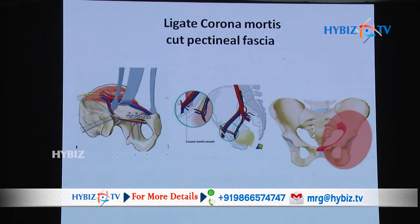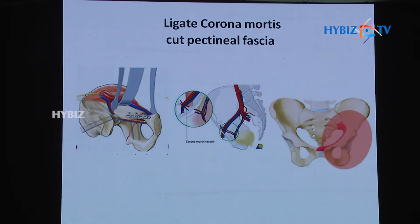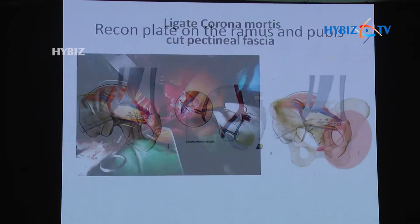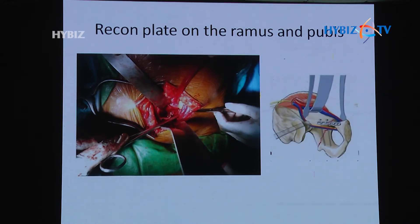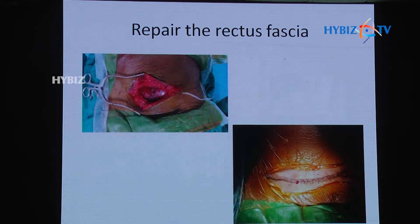The corona mortis is identified while sweeping around the iliopectineal line, ligated, and then the iliopectineal fascia is cut, exposing the fracture of the quadrilateral plate or superior pubic ramus. Though it appears challenging to dissect between the obturator neurovascular bundle and the external iliac vessels, this is actually an easier approach than the ilio-inguinal. In the operative photograph, you can see a plate fixed on the pubic ramus, a Devers retractor retracting the urinary bladder, and a cobra retractor posterior to the external iliac neurovascular bundle.